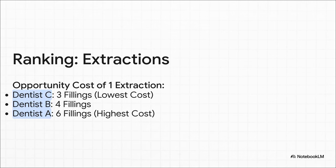You know the drill by now, right? Let's figure out the opportunity cost. For Dentist C to do one extraction, they give up the chance to do three fillings. For Dentist B, one extraction costs them four fillings. And for Dentist A, one extraction costs a massive six fillings. So who has the lowest cost for extractions? It's Dentist C. They have the comparative advantage.